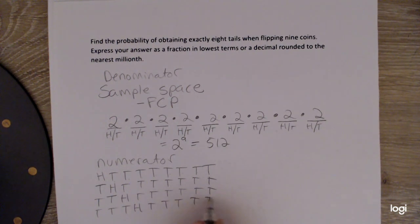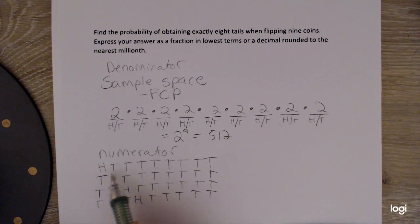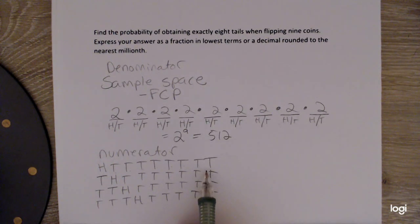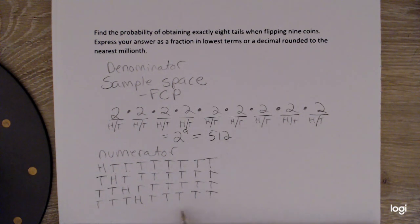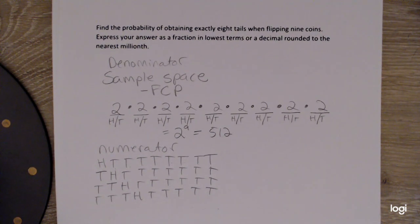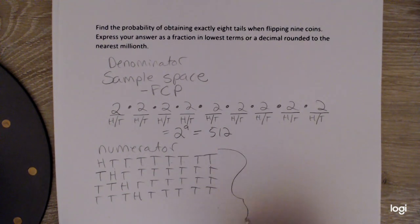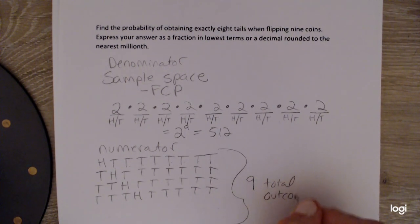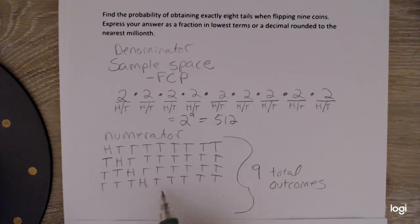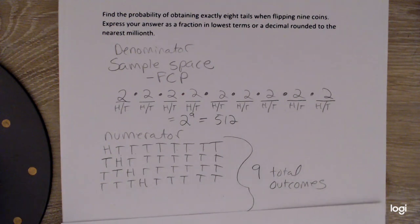you'll see the pattern here. It isn't enough to say that the first flip is going to be a head, and the rest are going to be tails. We have more than one case or outcome where we get exactly eight tails and exactly one head. So if you think about this head just shifting over position, we're going to actually end up with nine of these all together.